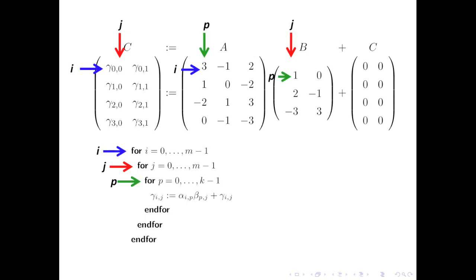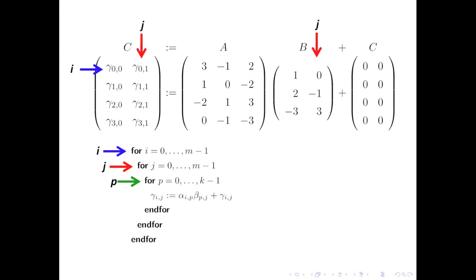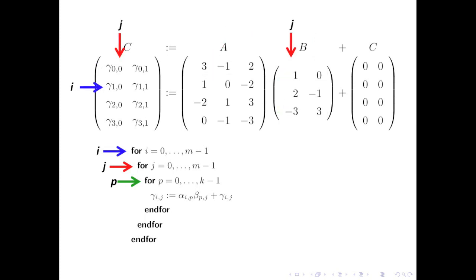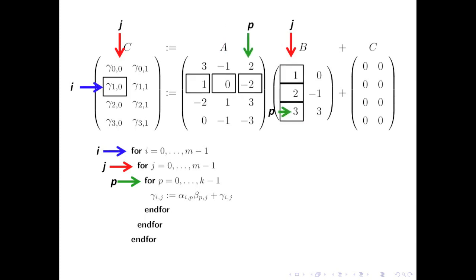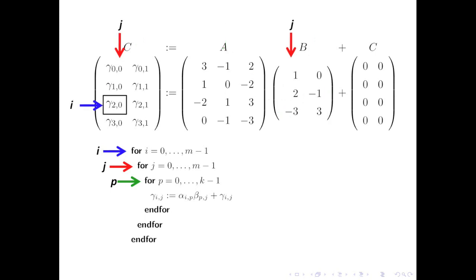Let's illustrate this. We start by setting i and j to 0 and update the first entry of C by taking the dot product of the i-th row of A with the j-th column of B. Then we move on to the next element — notice that we're going across rows. We do another dot product and move on. The important thing to notice is that we're computing C one row at a time.